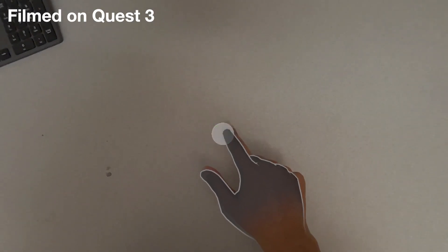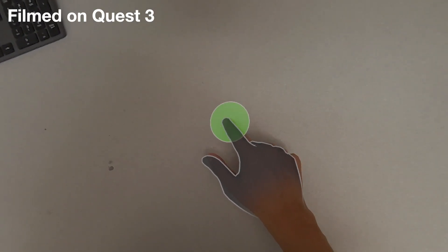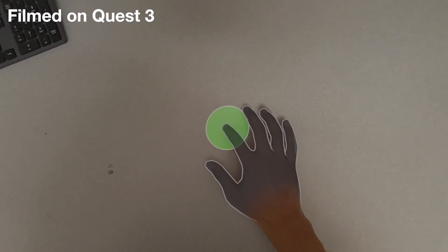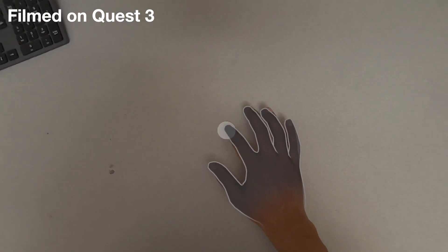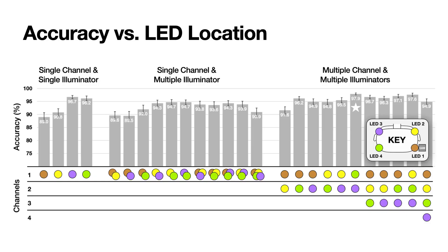Our model also estimates hover distance, visualized here by the size of the circle pad. Importantly, our prototype included four illuminators only as a vehicle for experimentation, allowing us to evaluate different placements and number of illuminators.